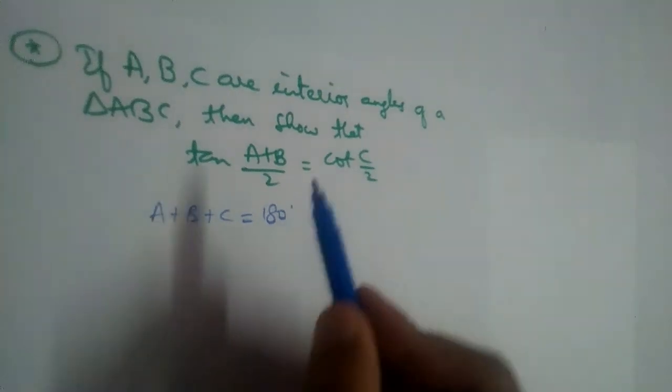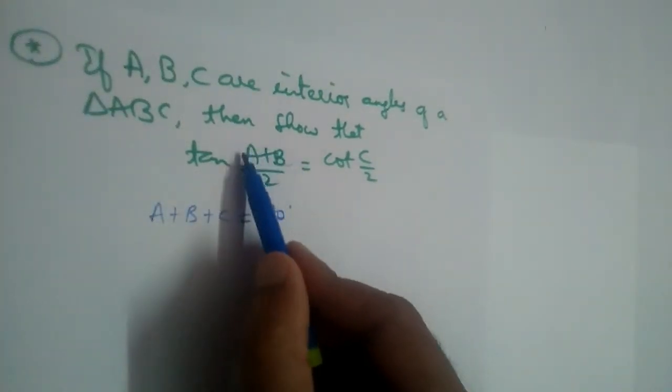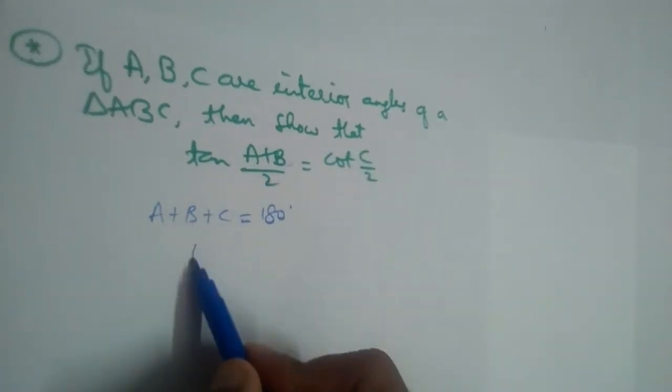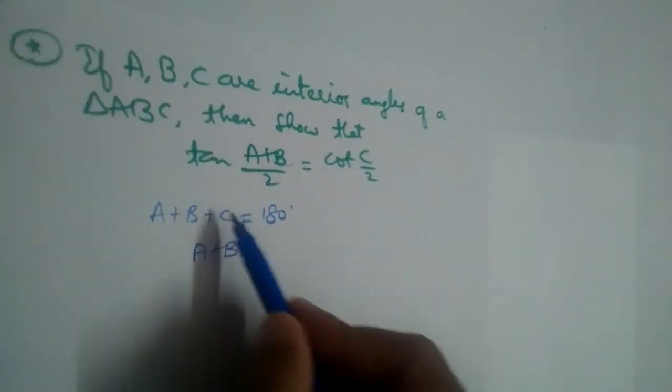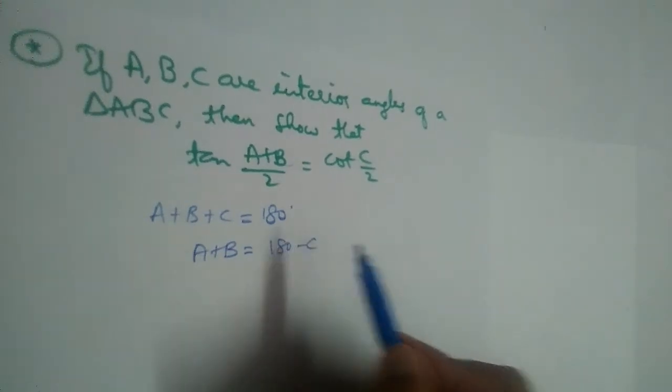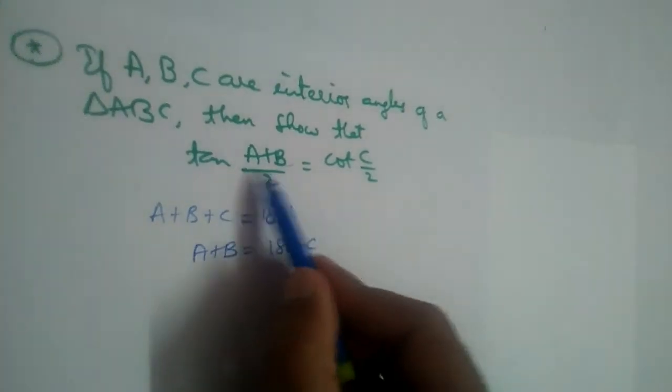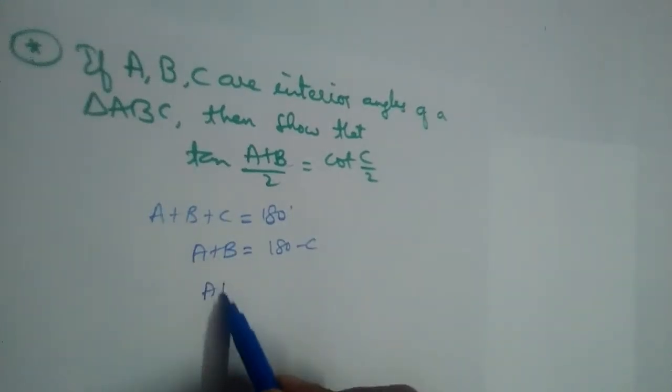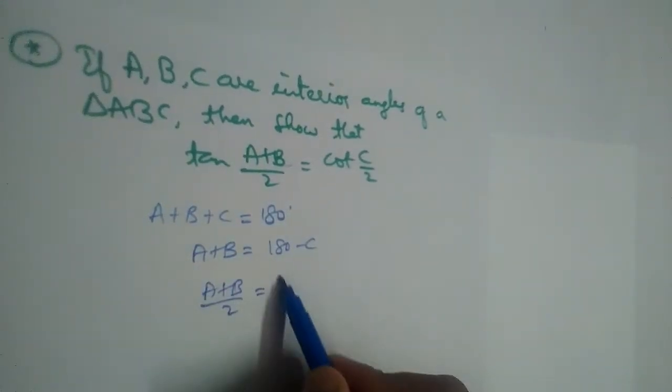Right. Now here we have A plus B, C is on the other side. So let us keep A plus B on one side and send C on the other side. And divided by 2 is there on both sides, so let us divide this equation by 2 on both sides.